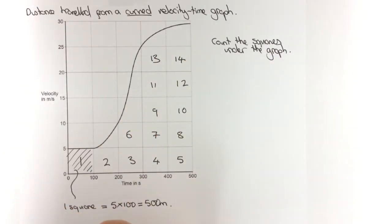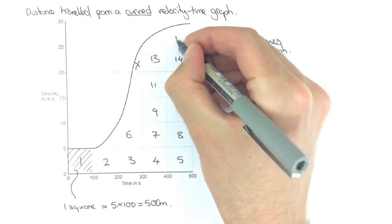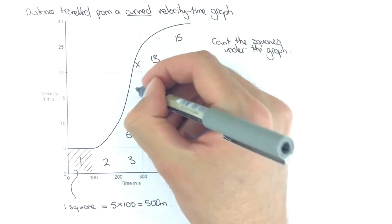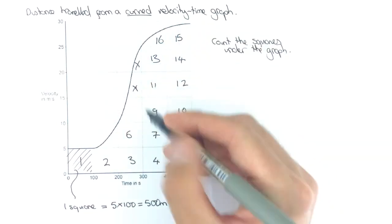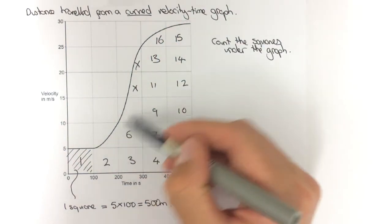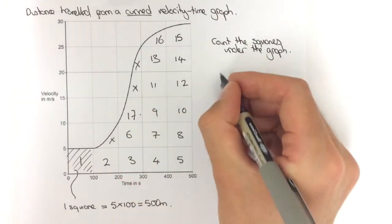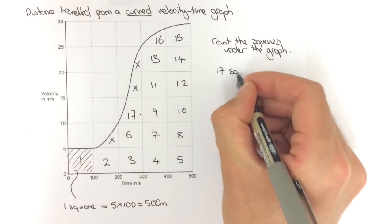And then I could say roughly this bit and that makes 15. This bit and that makes 16. So I've got roughly 17 squares.